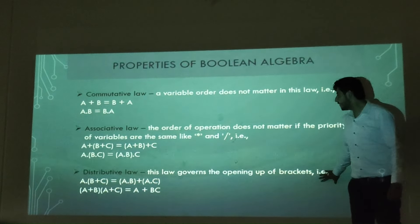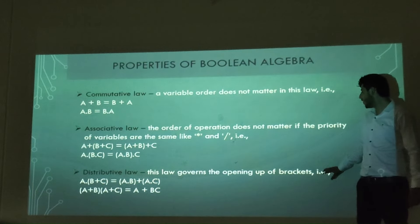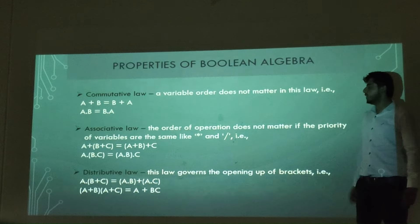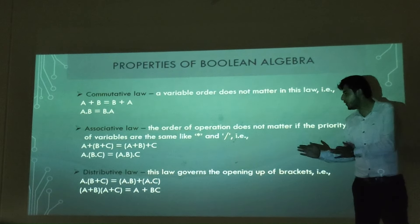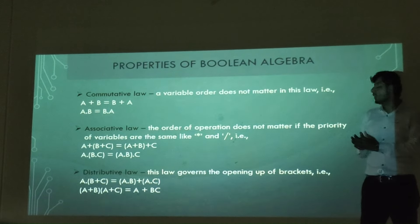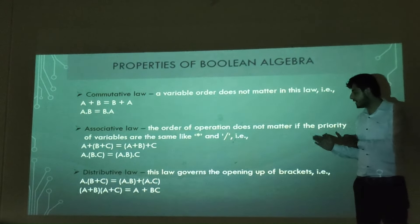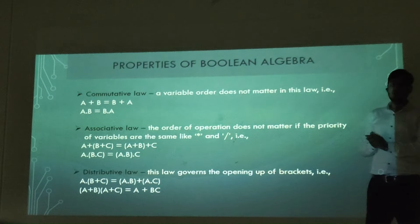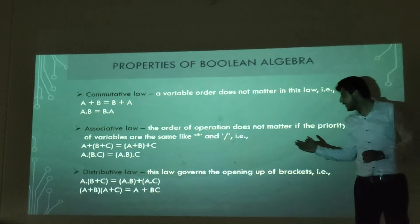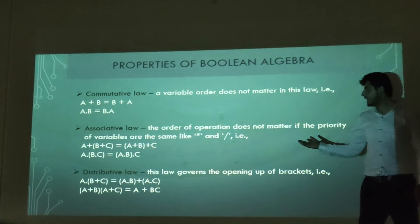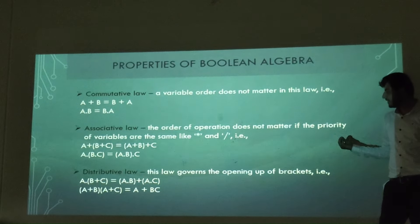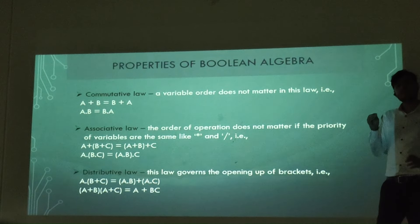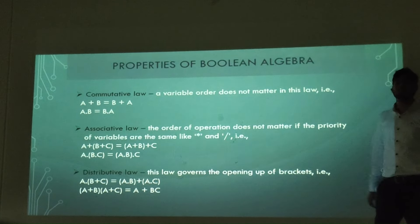The next is the distributive law. This law covers the operation outside the brackets. It states that a dot (b plus c) equals (a dot b) plus (a dot c). Another example is a plus (b dot c) equals (a plus b) dot (a plus c).